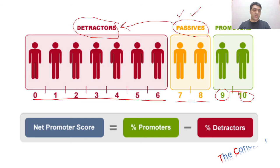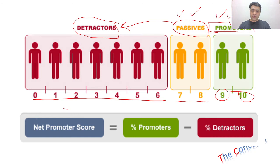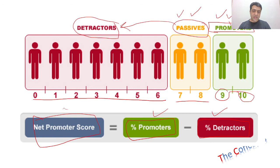Everybody who has answered 9 or 10 are your promoters. Ideally for all organizations, all customers should be promoters. These are also known as your delighted customers — they are so delighted with your product or service that they recommend it to other people. To calculate the net promoter score, you take the percentage of the promoters and then subtract the percentage of your detractors.